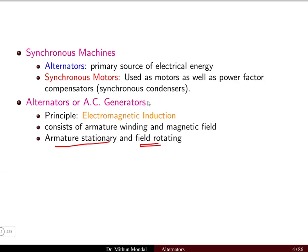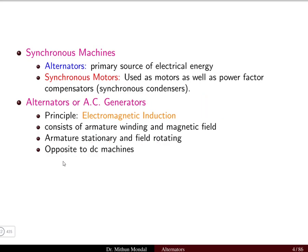In an AC generator the conductor carrying the current is stationary whereas the field is rotating. In contrast, in a DC machine the field is stationary whereas the armature is rotating. So the AC machine is opposite to the DC machine in terms of the rotating field and stationary armature.